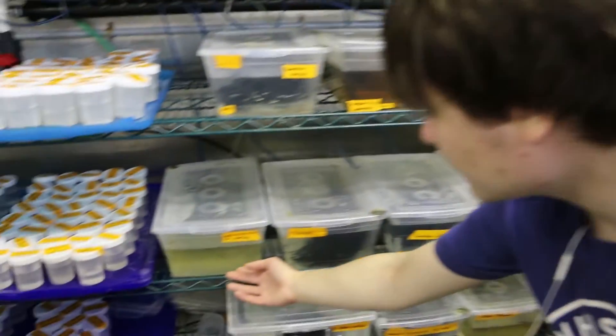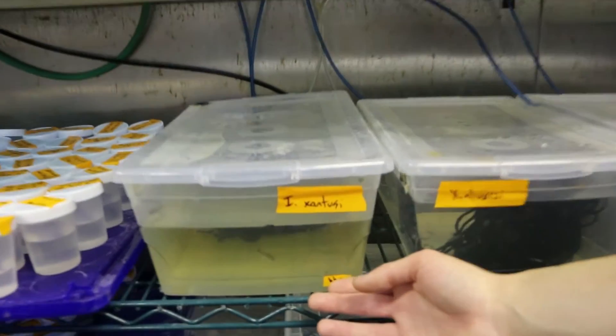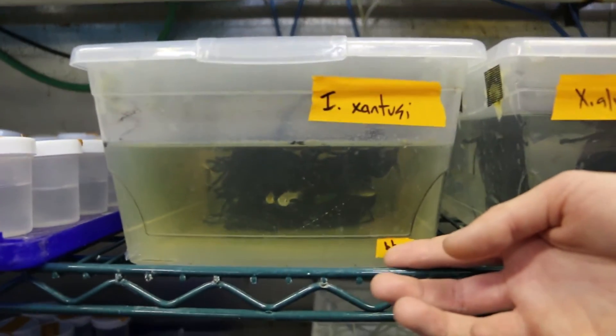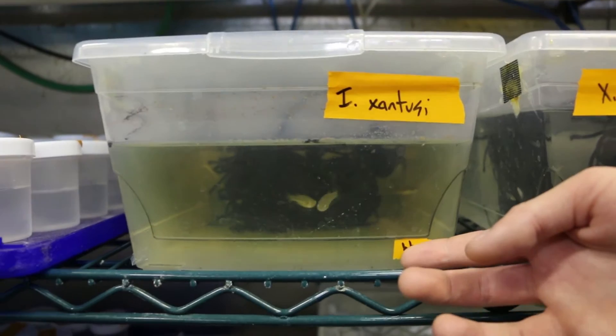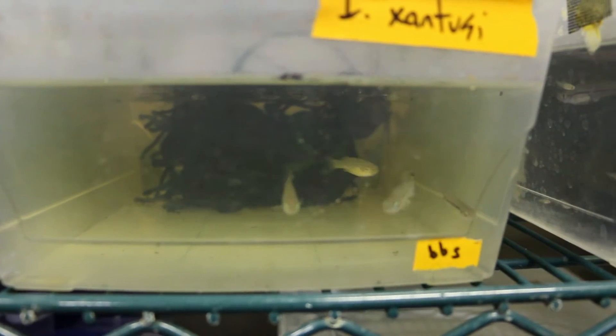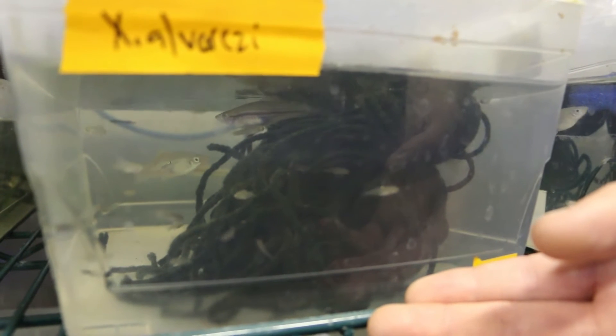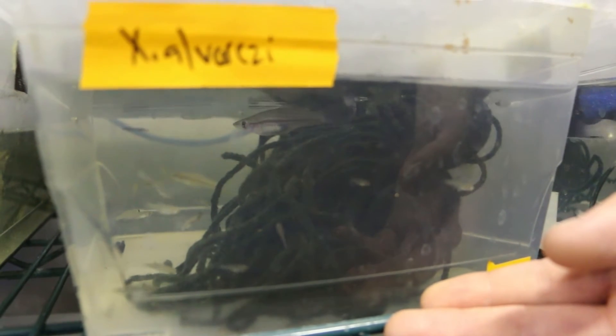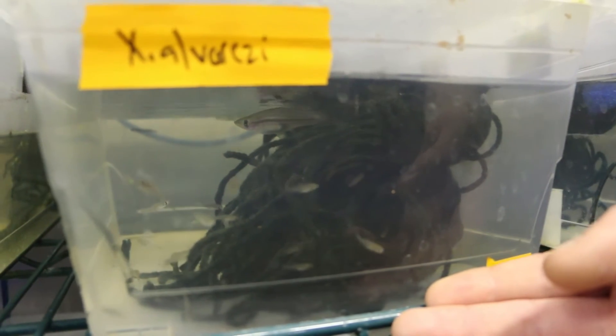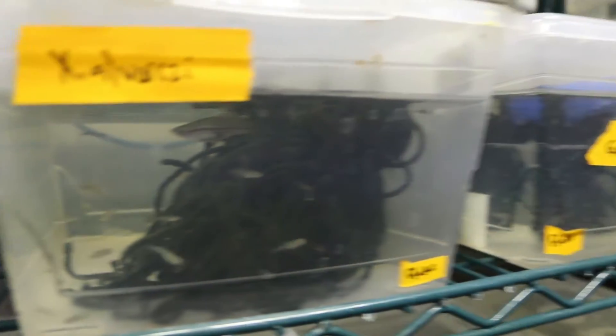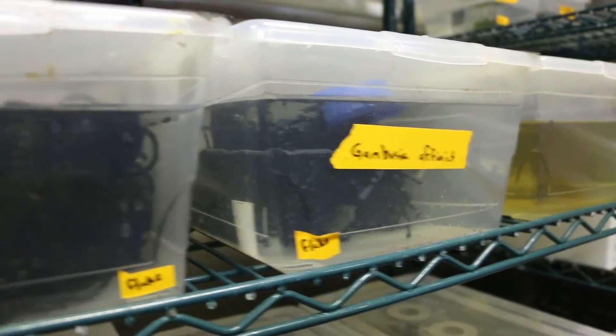So here on the left, we have a species of Goodeidae. They are truly viviparous. They give birth to live young, and while the young are developing inside the mother's body, they feed them using a placenta-like structure, much like a mammal. And here on the right, we have Xenophallus umbratilis. They're a type of Poeciliid, and they also give birth to live young. But the difference is they're ovoviviparous, which means they just hold their eggs inside of them until their eggs hatch, and then they just let the babies out.